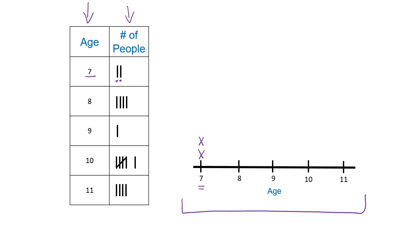Then I move on to eight years old. Since I have four tally marks, I know that there are four people who are eight years old. I find the eight on my line plot and I go ahead and make four X's: one, two, three, four.